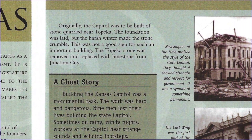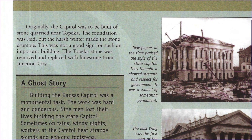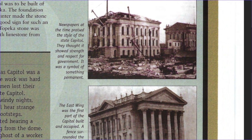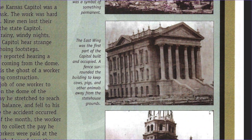Originally, the capitol was to be built of stone quarried near Topeka. The foundation was laid, but the harsh winter made the stone crumble. This was not a good sign for such an important building. The Topeka stone was removed and replaced with limestone from Junction City. Newspapers at the time praised the style of the capitol. They thought it showed strength and respect for government. It was a symbol of something permanent.